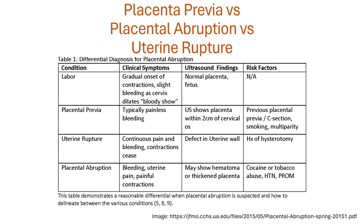Here is a table clearly explaining the differences. Normally during labor there is gradual onset of contractions with some slight bleeding as the cervix dilates, called bloody show. In placenta previa there can be bleeding but it is typically painless. In rupture and abruption, however, there will be painful bleeding.